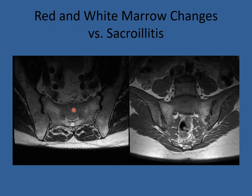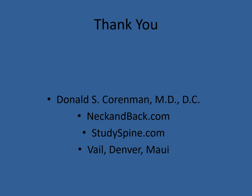There are red and white marrow changes on axial views through the sacroiliac joints — alternating white and black areas — which are typical aging changes as fatty marrow replaces red marrow. But you must differentiate this from sacroiliitis, where the white signal is only on the edges of the vertebra at the sacroiliac joint, with visible erosions. This is inflammation of the sacroiliac joints, occurring bilaterally in ankylosing spondylitis. You can contact Dr. Kornman or check the websites neckandback.com and studyspine.com for further information.